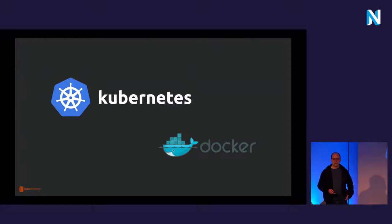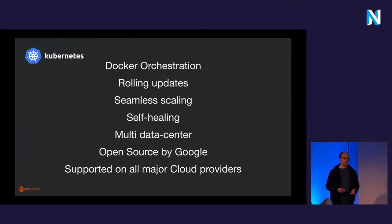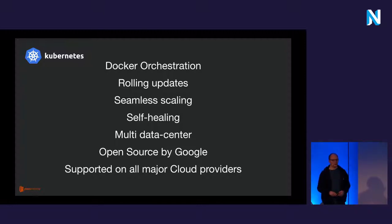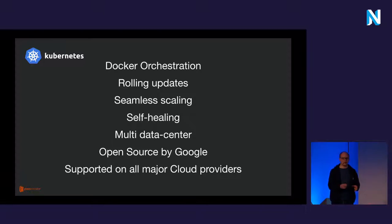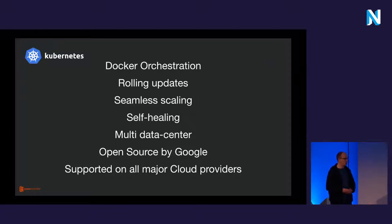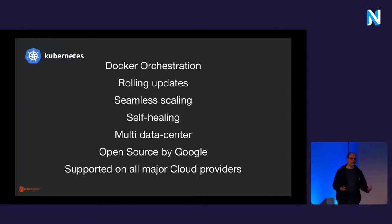Kubernetes is Docker orchestration — it takes a lot of tasks off your back if you want to host it, though it's not easy to get into because you have to learn a lot of new things. It features things like rolling updates, it's self-healing, and you can scale seamlessly and automatically. You have a setup that runs on a small scale when you need it and scales automatically if there's a big campaign running. It's open source, developed by Google, actively maintained, with about 47 commits merged into the project every day in 2016.